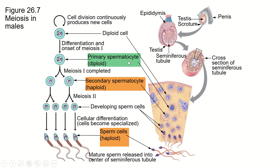That's called a primary spermatocyte. It does the first phase of meiosis and separates the homologous chromosomes, creating two secondary spermatocytes that are haploid. Haploid means half the number of chromosomes. So we started off with 2N or 46 in the human. We end up after meiosis 1 with two cells that each have 23 chromosomes. And then each of those undergoes meiosis 2, creating four cells that we call spermatids.